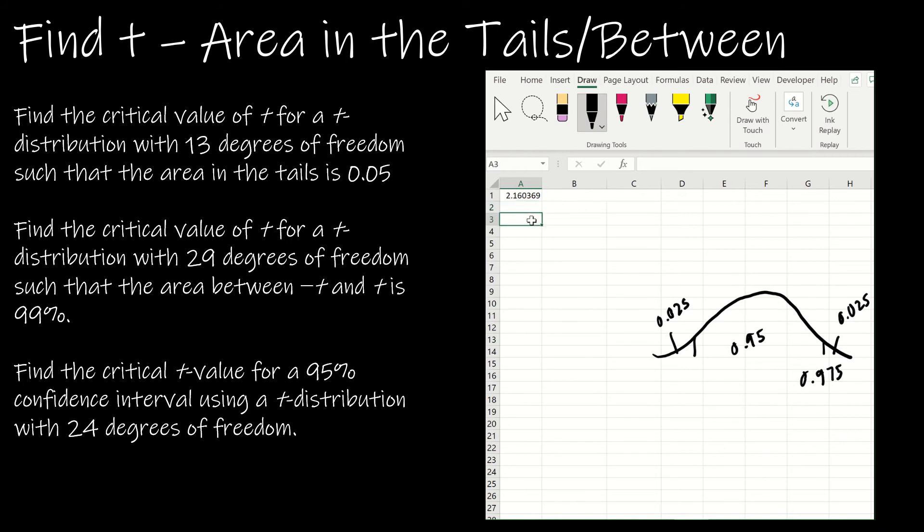The other way that you can do it is you can actually say t dot inverse dot 2T, which tells me it's two-tailed. Notice there's the same amount in each tail. Then I can use the 0.05, which is the 5% that they gave me, with 13 degrees of freedom. Notice I get the exact same solution.